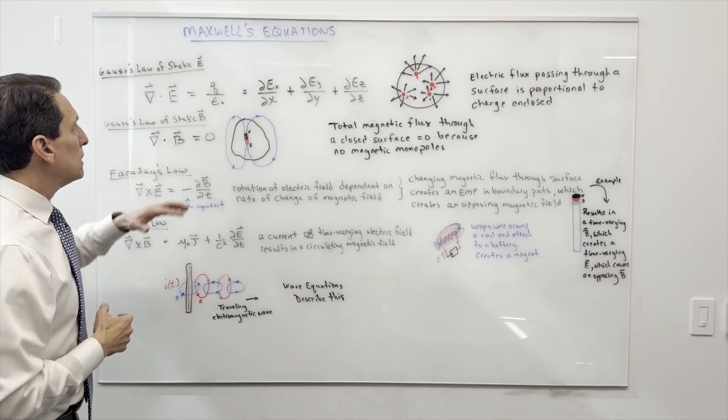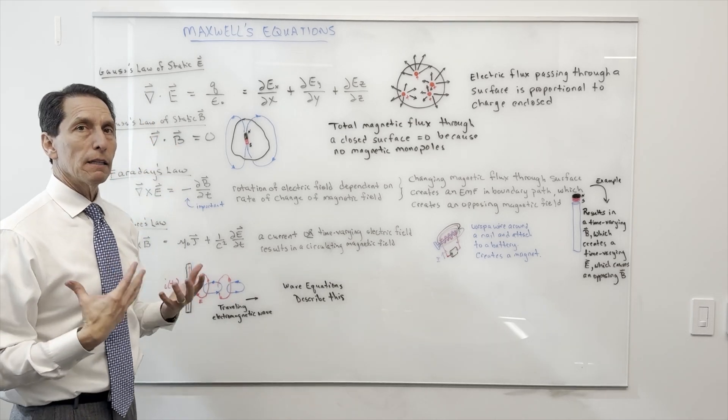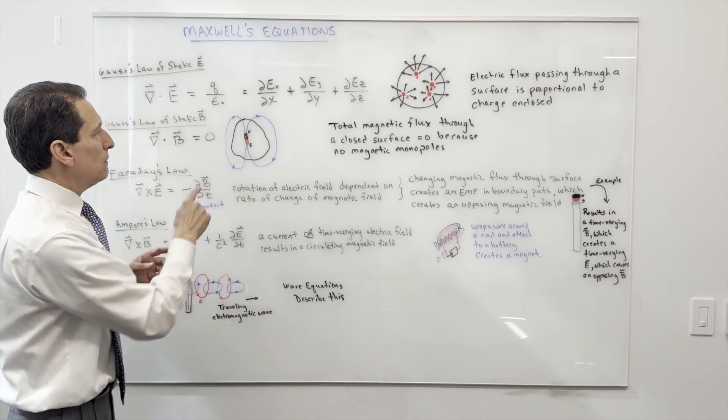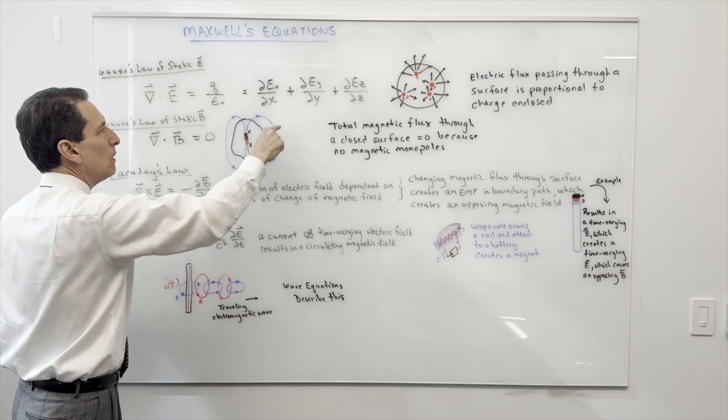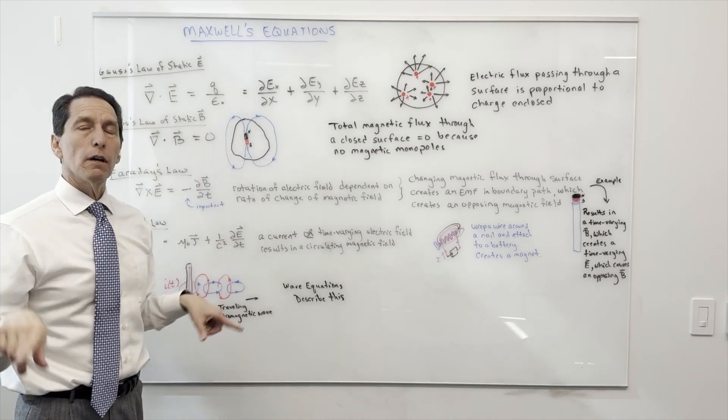The second one's very similar, it's called Gauss's Law of the static magnetic field. Now magnets are a little different because if you have a magnet inside of a space or a volume, the magnetic field lines always come back in on themselves—they go out the north, come in around the south.